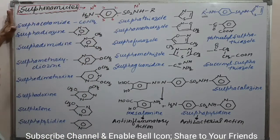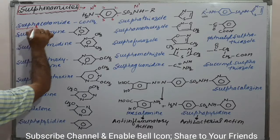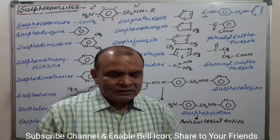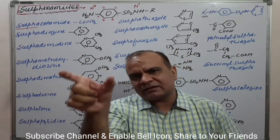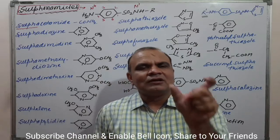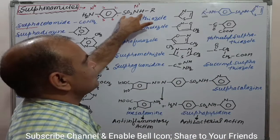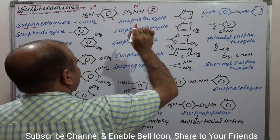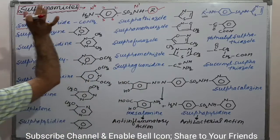The first drug is sulphacetamide. The prefix 'sulpha' indicates the sulphonamide core — it is the first initial word of the drug molecule. There is an R substituent at N1, and depending on the R substituent, the suffix of the drug name is decided.